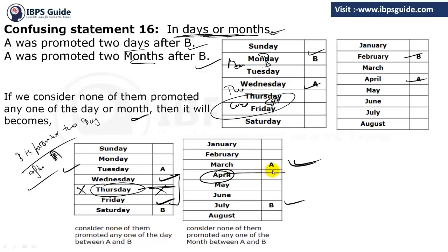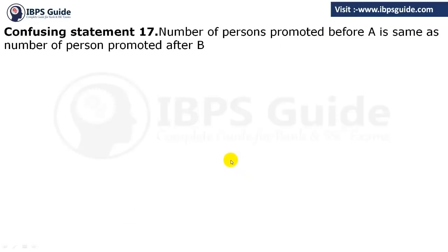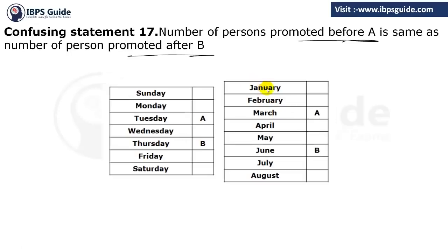The seventeenth statement: the number of persons promoted before A is the same as the number promoted after B. Before A must equal after B. For example, if promoted before A is two, then after B is also two. This means A and B are symmetrically placed in the sequence — before A to after B must be equal.